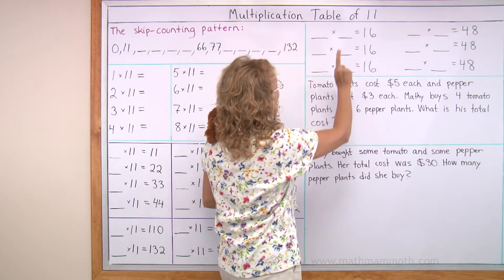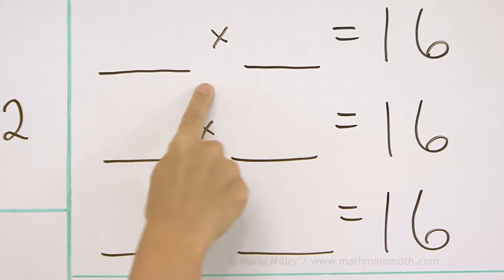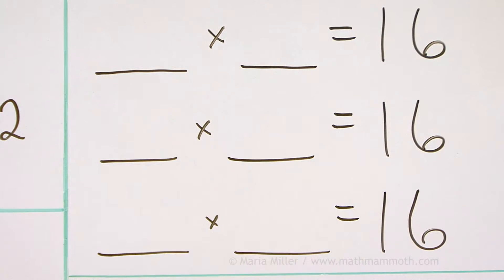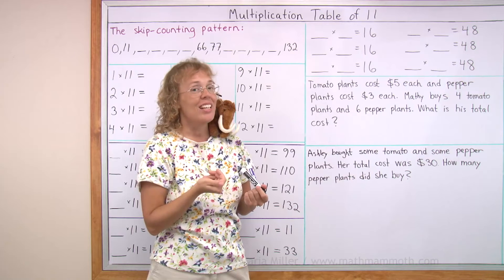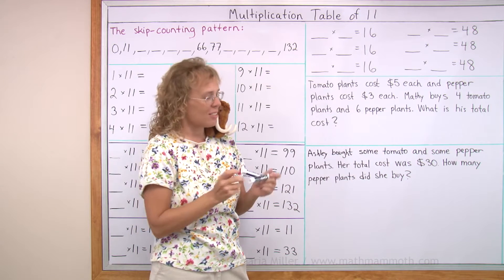Over here we have lots of empty lines equals 16. Something times something equals 16, and your task is to find those numbers. Two numbers that when multiplied give you 16, and there are many possible answers.